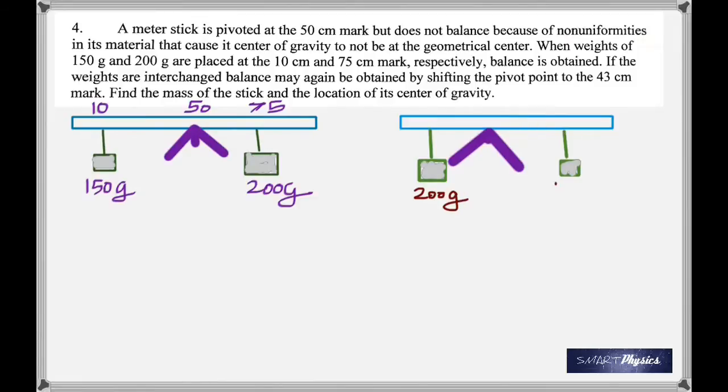So the 200 gram is now on the left side and the 150 gram is on the right side. And the pivot is now at 43 centimeter. The 200 gram is at 10, the 150 is at 75. And the red arrows show the actual center of gravity.